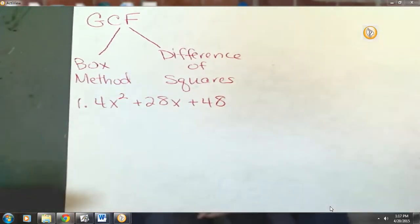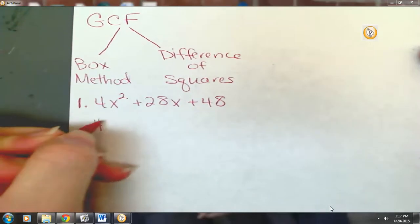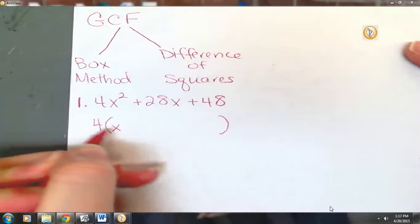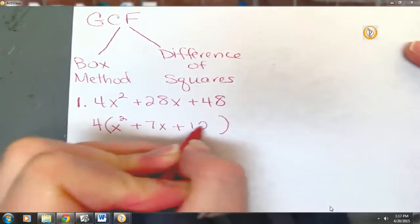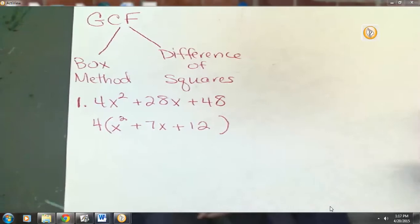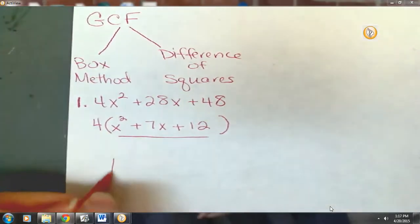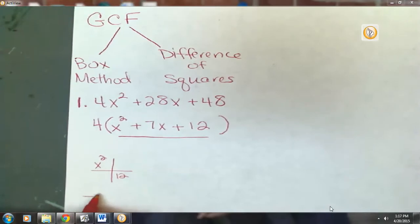And you guys are right. There is a greatest common factor here. What is the greatest common factor? 4. So let's factor out a 4 from each term. Remember, factoring out a 4 is like dividing everything by 4. Now, we can keep going. In parentheses, we have a trinomial that can be factored using the box. So we're looking for two numbers that multiply to 12 and add to 7.